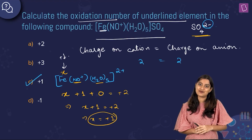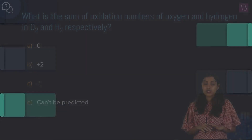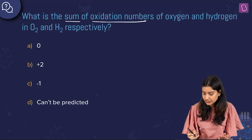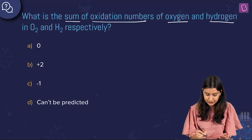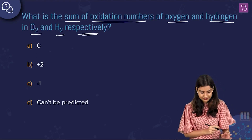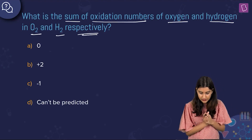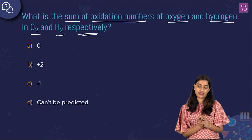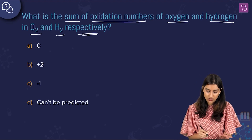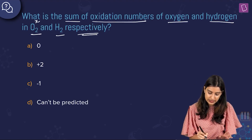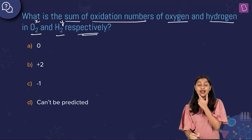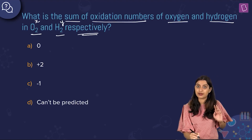The next question asks for the sum of oxidation numbers of oxygen in O₂ and hydrogen in H₂ respectively. We need to find the oxidation number of oxygen in O₂, call it x, and the oxidation number of hydrogen in H₂, call it y, then report the value of x + y.